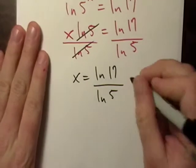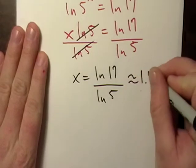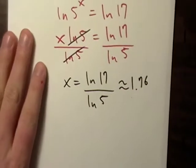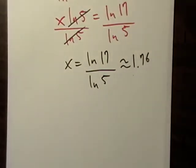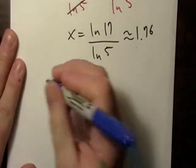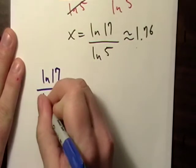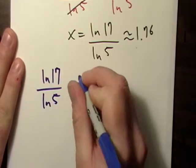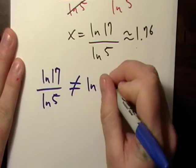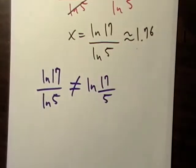I got 1.76 roughly. Now, be careful here. All right, I'm going to tell you what. Natural log of 17 over natural log of 5 is not equal to natural log of 17 over 5. So, do not fall into that trap.